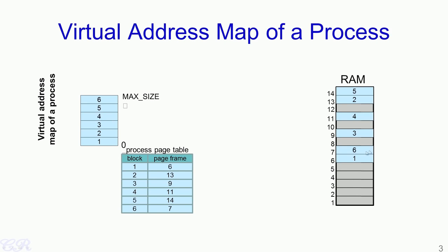As we have seen in an earlier video, the virtual address space of a process is divided into equally sized blocks. Typically the size of each block is 4 kilobytes. Each process would also have a process page table in memory which maps each block of the process into a corresponding page frame. The RAM is divided into page frames of size 4 KB, similar to the block size. These page frames contain the actual code and data of the process which is being executed.